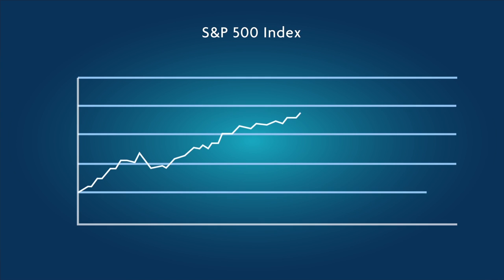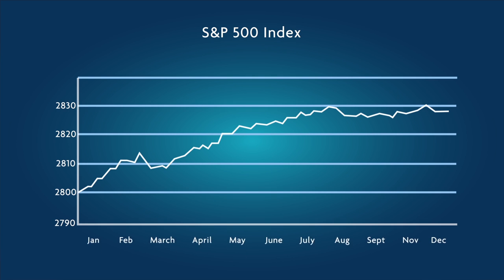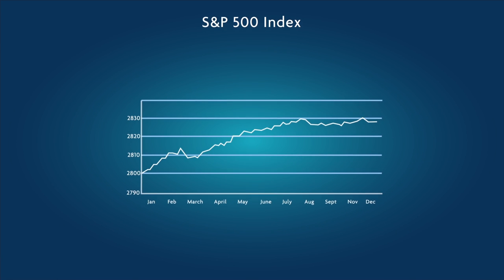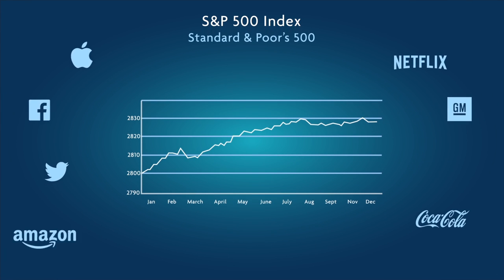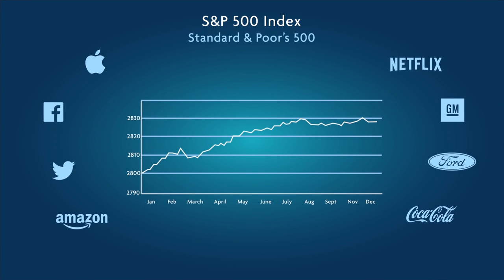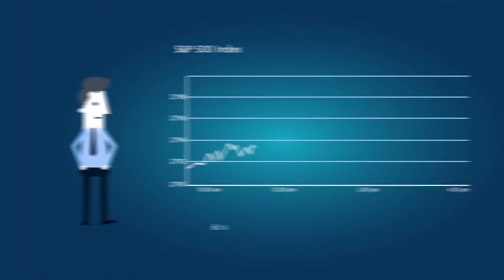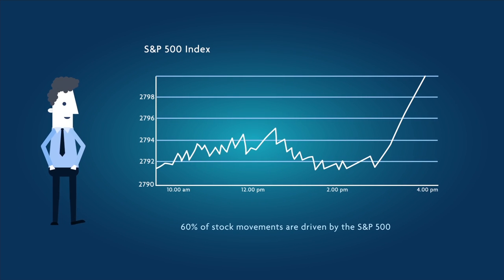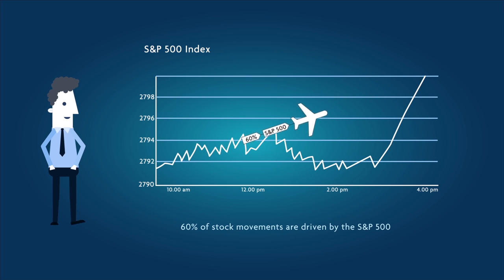The S&P 500 Index displays the prices of the 500 most widely held U.S. companies and is, without a doubt, the most important index in the world. It is also the most important index for the intraday trader. Why? Because 60% of a stock's movement will be dictated by S&P 500 Index movement alone.